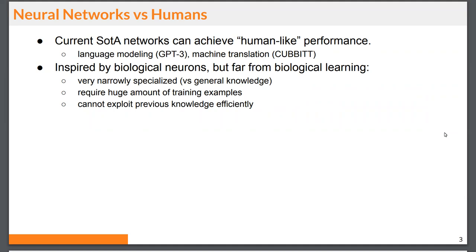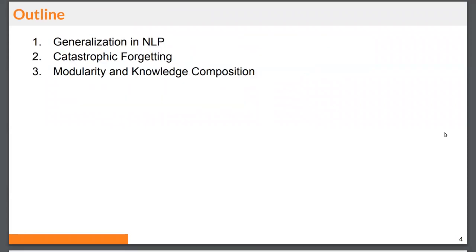These models require huge amounts of training examples, which is not typical for humans, and it's debatable whether they can efficiently exploit previously learned knowledge. I will be talking about three topics: first, generalization in the context of NLP; then, catastrophic forgetting; and last, modularity and knowledge composition.